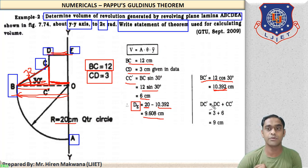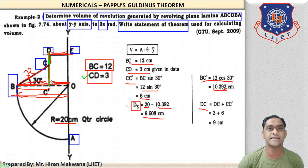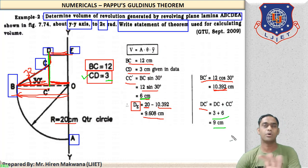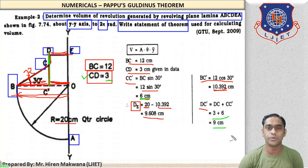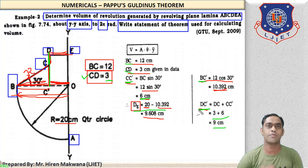One more dimension to find is DC'. As shown in figure, DC' is the total vertical distance: CD is already given as 3 cm, plus CC' = 6 cm as calculated earlier. So the total is 6 + 3 = 9 cm. All missing dimensions are now available. BC and CD are from the data; CC' and DC' are from trigonometry; DE and DC' are from geometry.